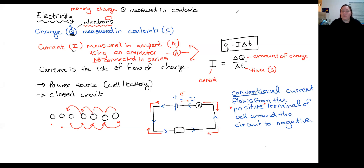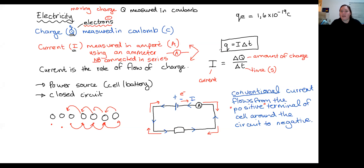Just something you need to know: the charge on an electron is 1.6 × 10⁻¹⁹ coulombs. It is possible — very unlikely but possible — that they can ask you to use the current equation to work out the charge and then ask how many electrons move past a point. But once again, this really is grade 10 work so it's very unlikely.